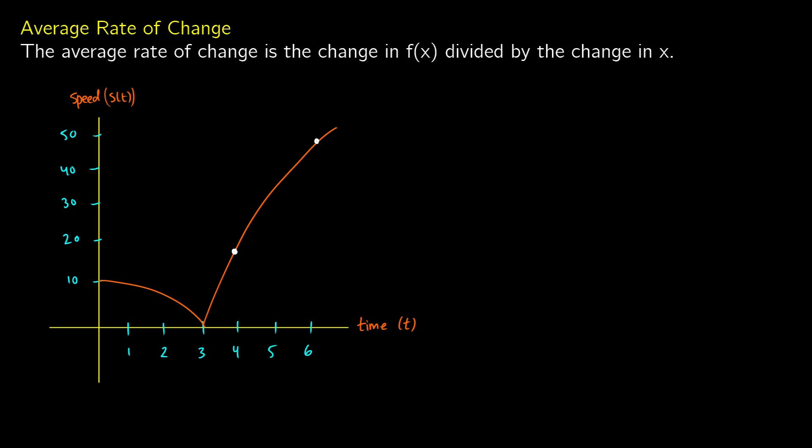The average rate of change is going to be determined by the change in f of x divided by the change in x. Here we have a graph of some speed changing over time. I have two points: at time 4 I have a point specified and at time 6 I have a point specified. What I want to figure out is between this period, between 4 and 6, what is my average change in terms of speed.